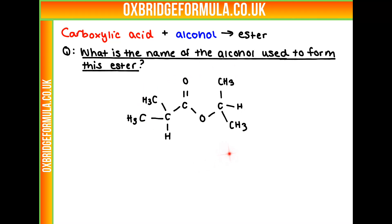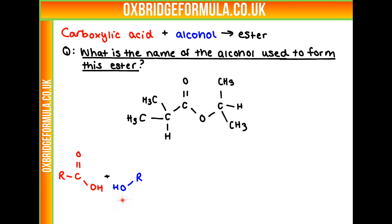Let's look at what a generic acid plus alcohol to get an ester reaction looks like. If we draw a generic carboxylic acid — here's our acid group, and then we have an R group over here — and we have an alcohol, which is just going to have an R group plus an OH. If we combine these, we combine our two hydroxyl groups to just have one singular oxygen, and it looks something like this. This is our alcohol group in blue, and this is our acid group in red.